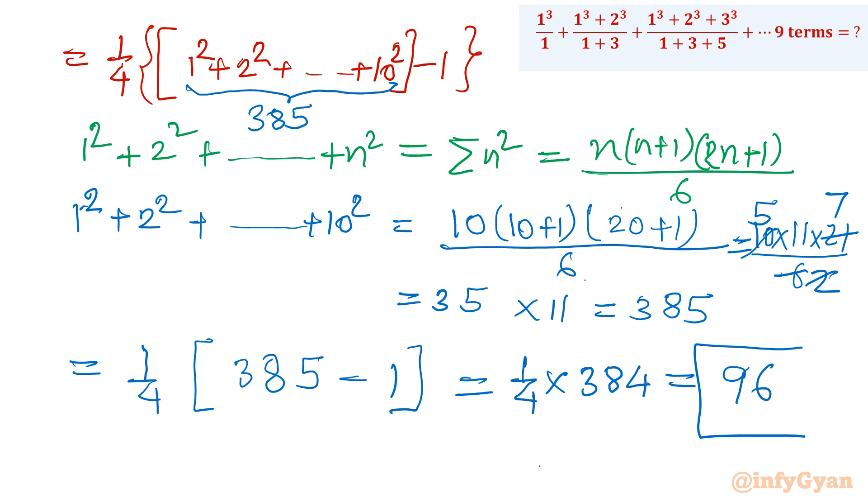So 96 is the sum of the given sequence or series. This 9 term addition is 96. I hope you like this video. Thank you so much for watching. Do not forget to like, share and subscribe. Bye till next video. Good luck.